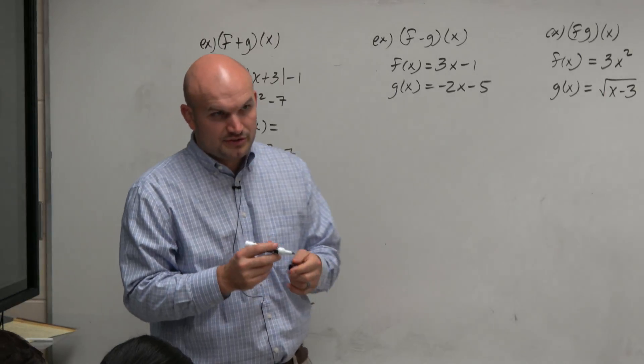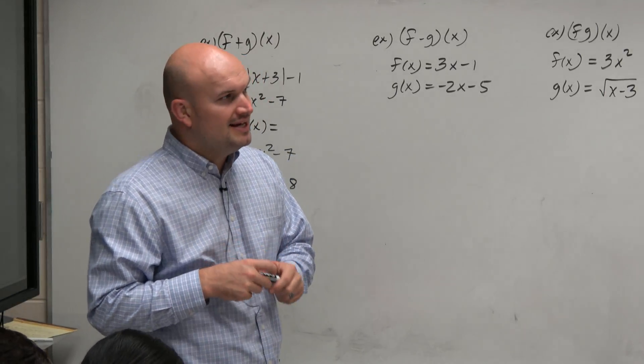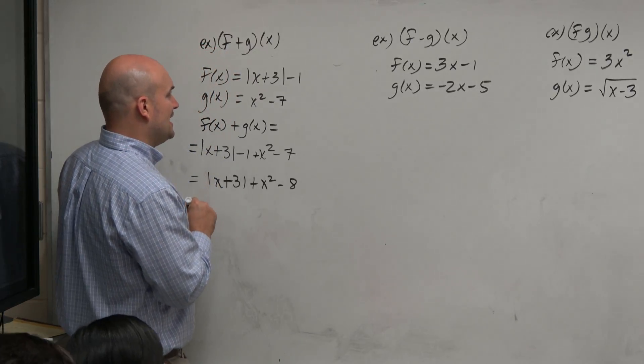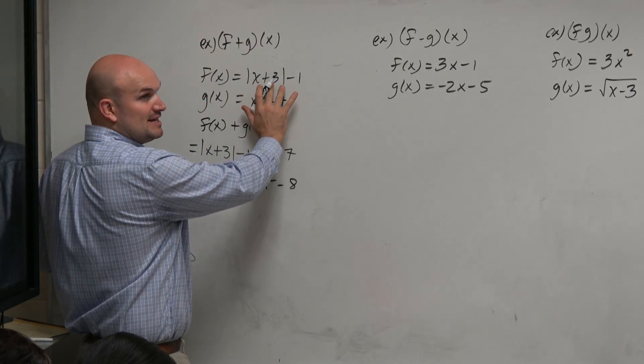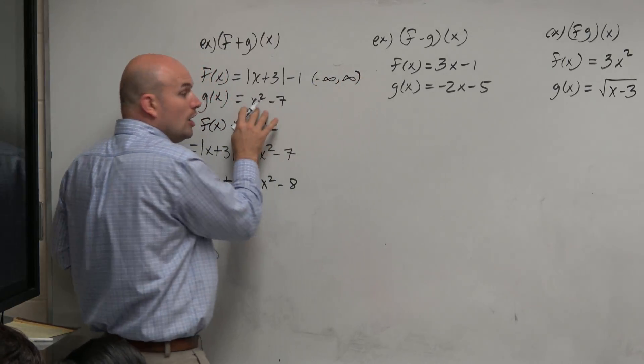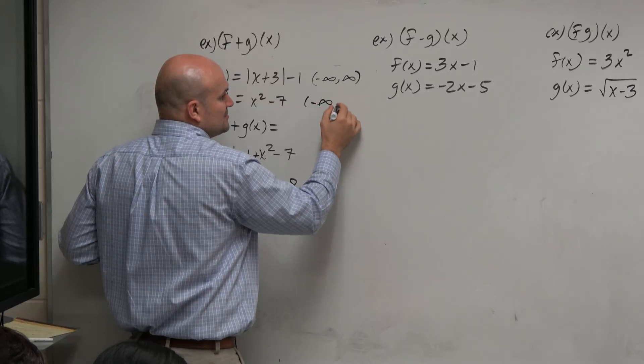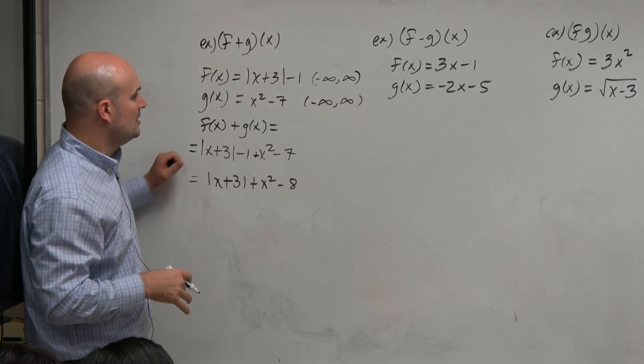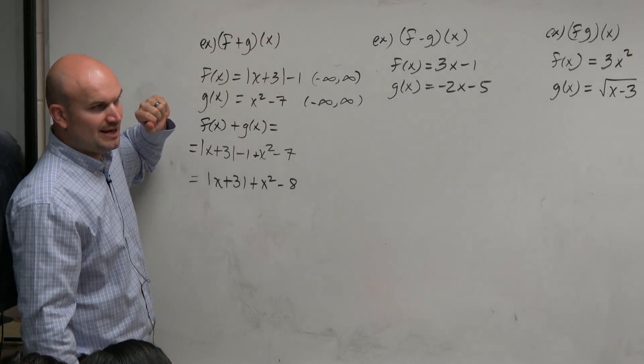Now, the real question that we're going to discuss or be interested in is identifying the domain. And what we can look at is, if we look at the domain here, we see absolute value. We shouldn't even have to think about the domain. Absolute value, domain's all real numbers. A quadratic, domain's all real numbers, right? Because we have those 12 basic functions that we looked at in practice. So we know that these have no restrictions on their domain.